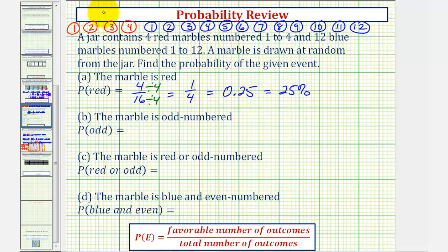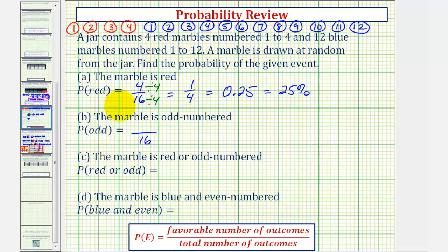Next we want to find the probability that we select an odd marble. Again, the total number of outcomes would be 16 because we're selecting one marble from this group, and now let's count the odd marbles. Well there are two odd red marbles, one and three, and there are six odd blue marbles.